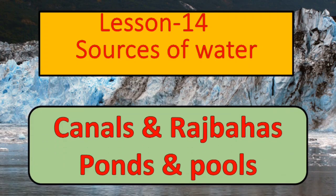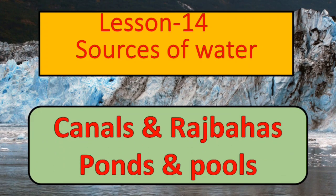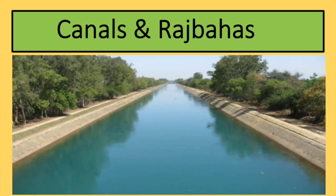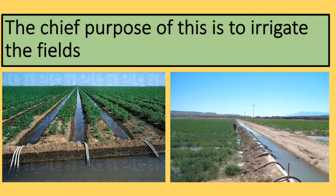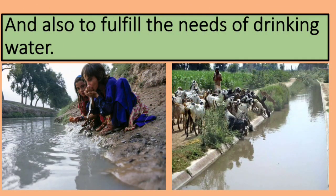Today we will learn about canals and rajbahas, and ponds and pools. Rajbahas are also known as suwe in Punjabi. Canals, rajbahas, or streams are made to take river water to far away areas. The chief purpose of this is to irrigate the fields. We use canal water for irrigation and also to fulfill the needs of drinking water. It is used for various purposes.